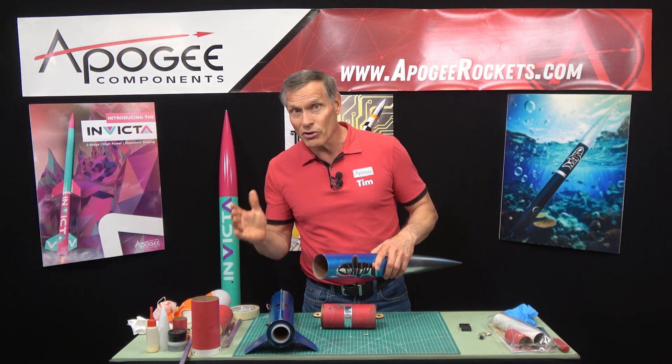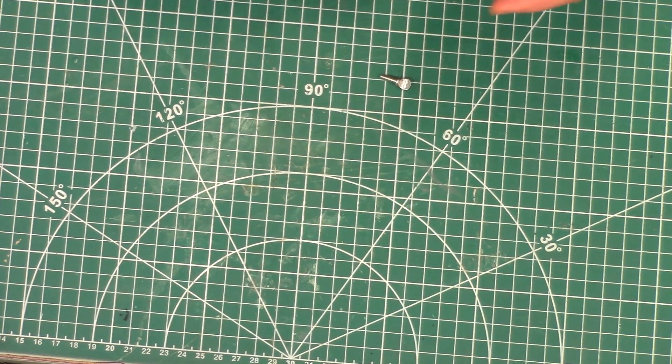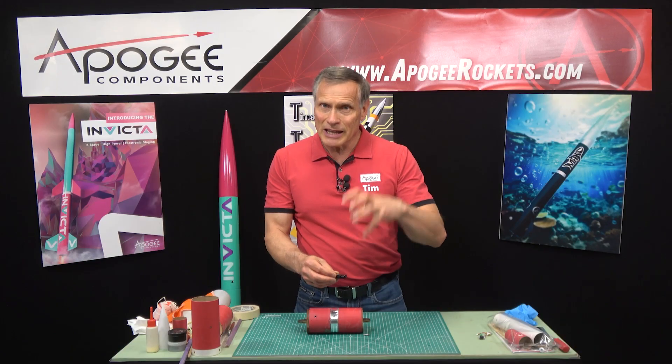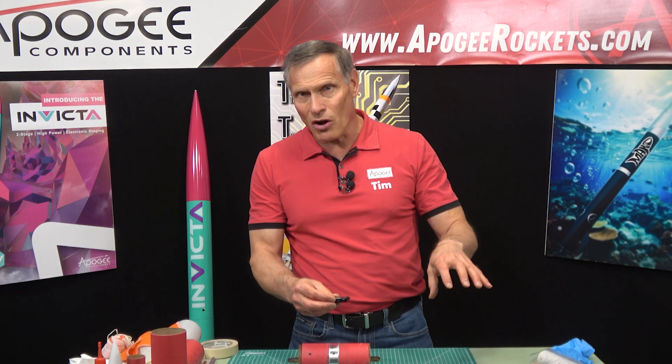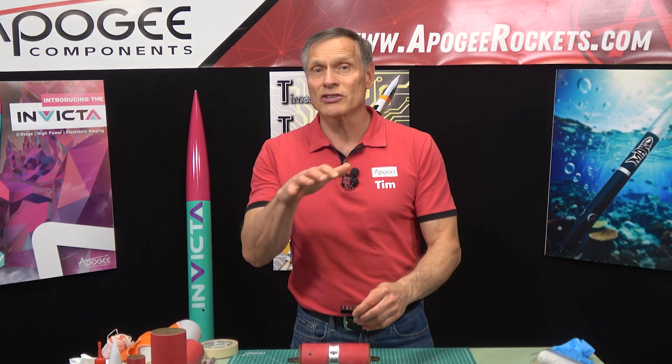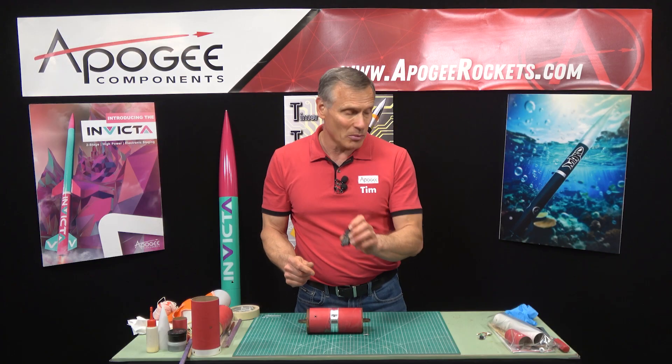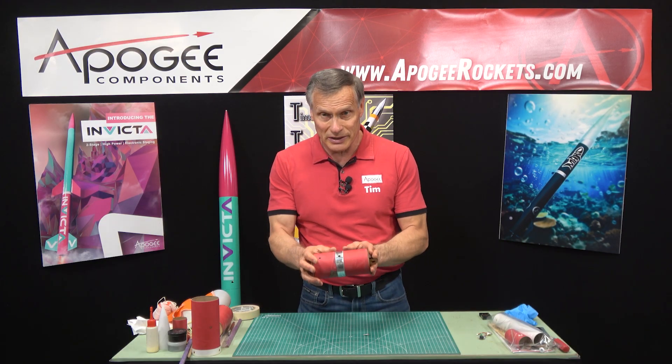Now there's other options as well. You can set it up to use something called a chute release which controls the deployment of the lower parachute by keeping that parachute reefed up but it's out in the air already and then once it gets to a lower altitude it just unfurls that parachute but you do have that parachute flapping around in the wind as the rocket's coming down. So that is an option if you want to go with that route but some people do want to put this into the nose cone.